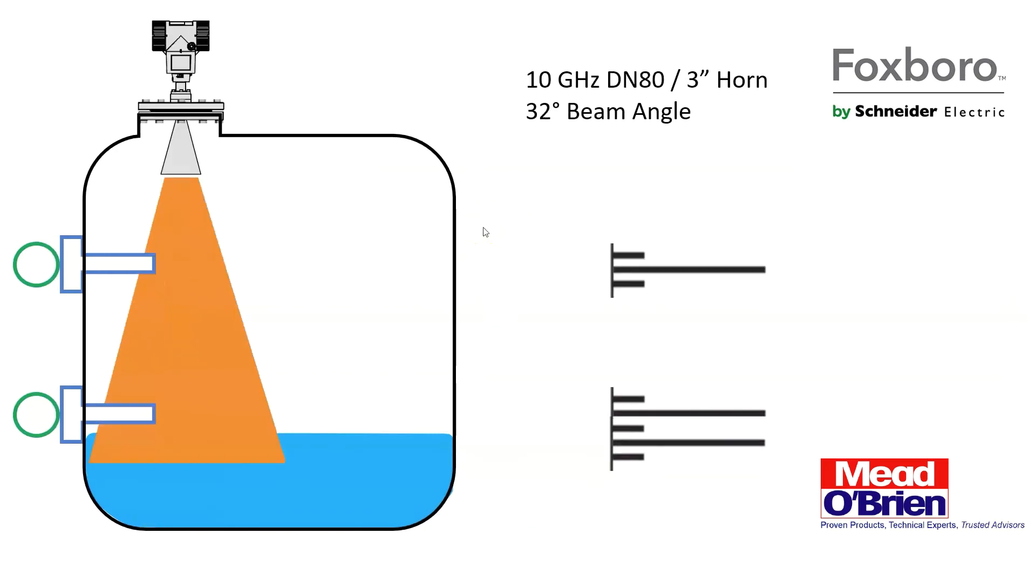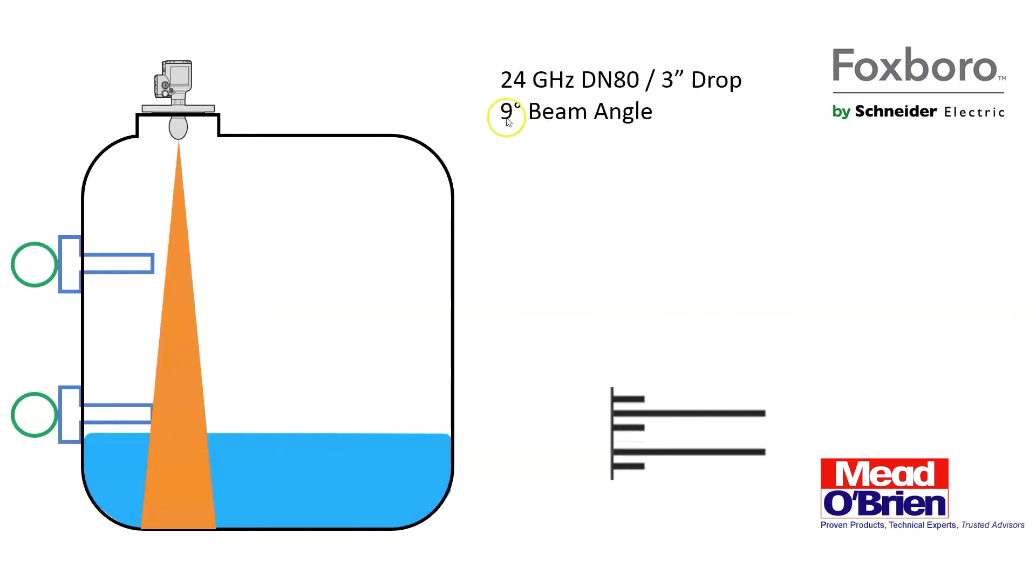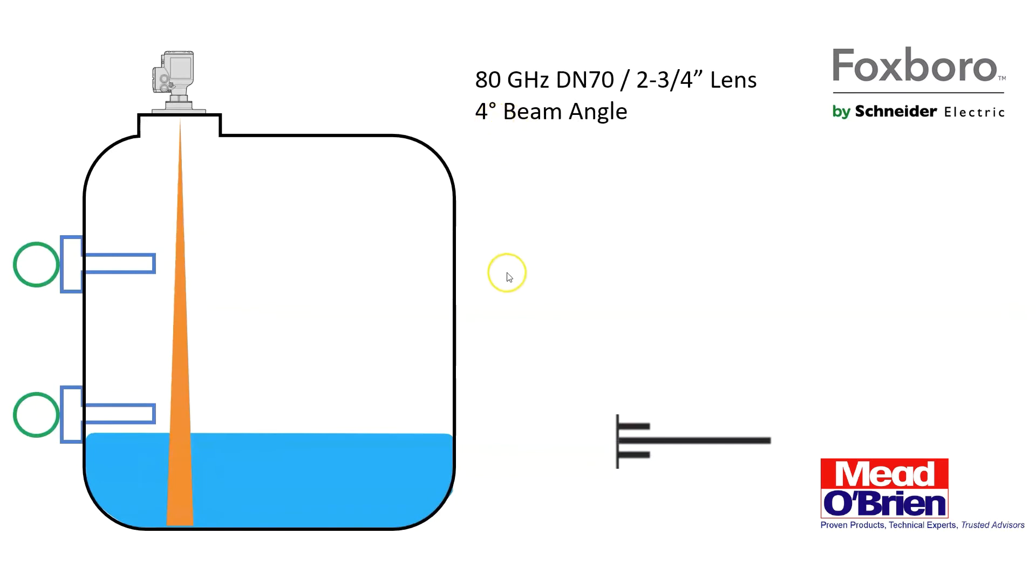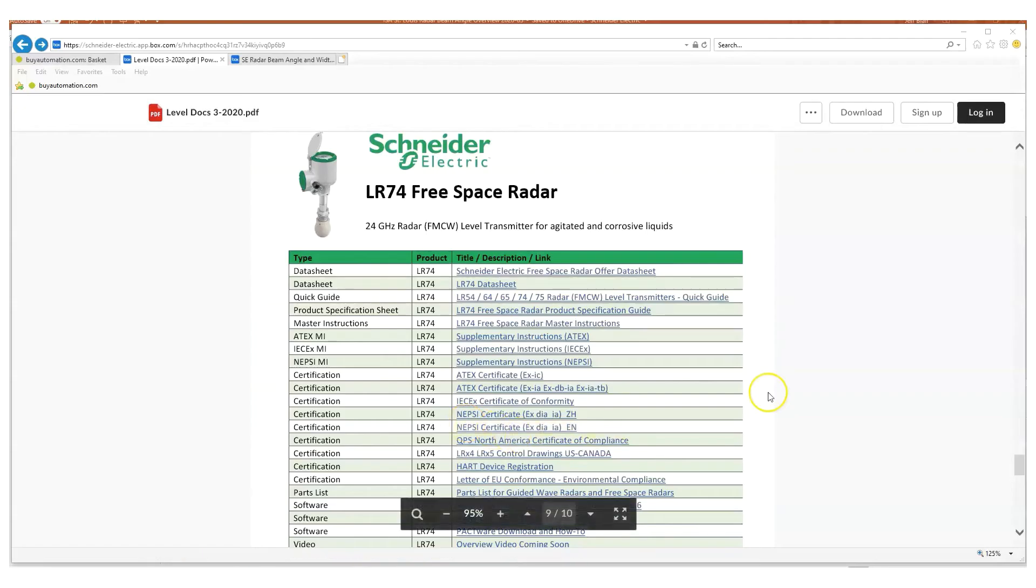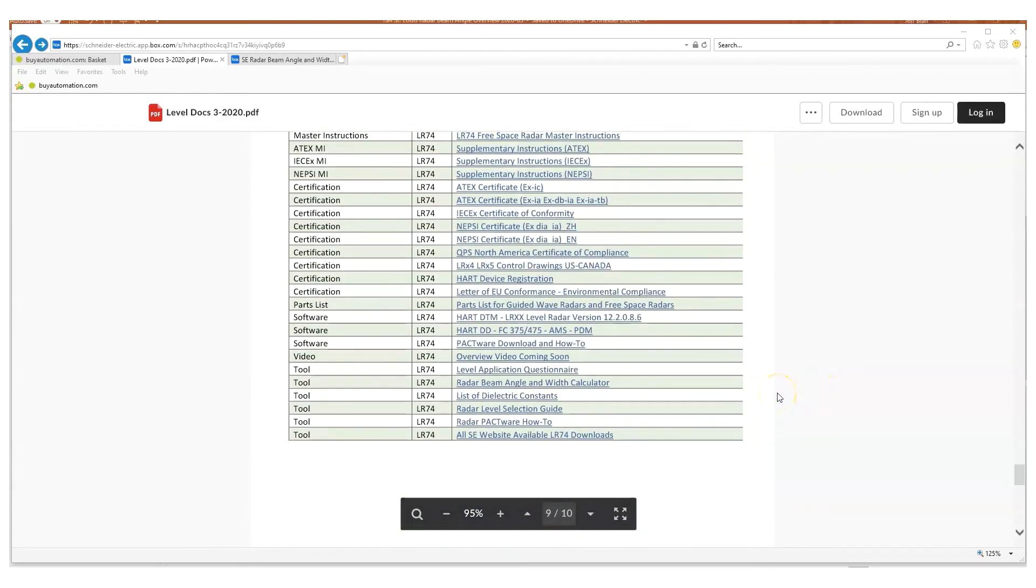If you take a look at the three we saw, 32 degree, a nine degree, and a four degree. Well, I'll show you. We can actually use a calculator to figure out how big that beam is going to be. So if you go to the web and you search for a radar beam angle and width calculator, you can find a variety of things.